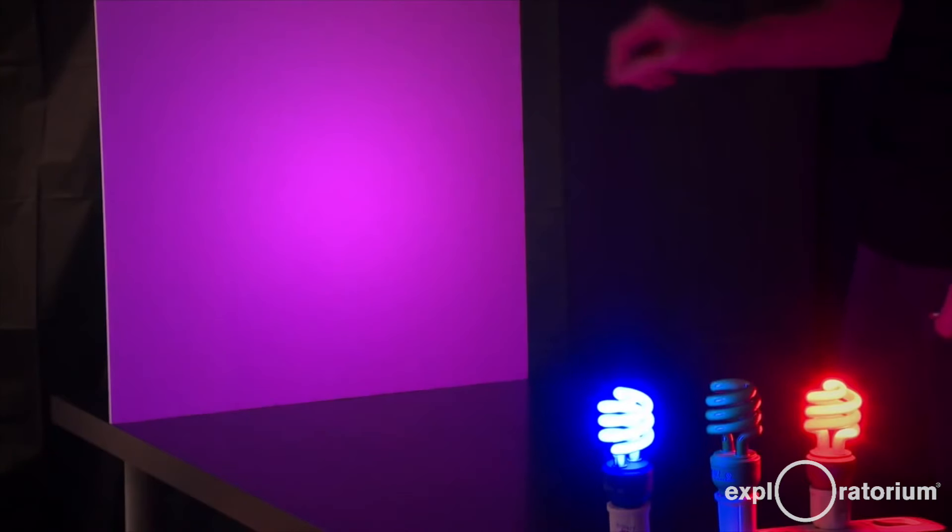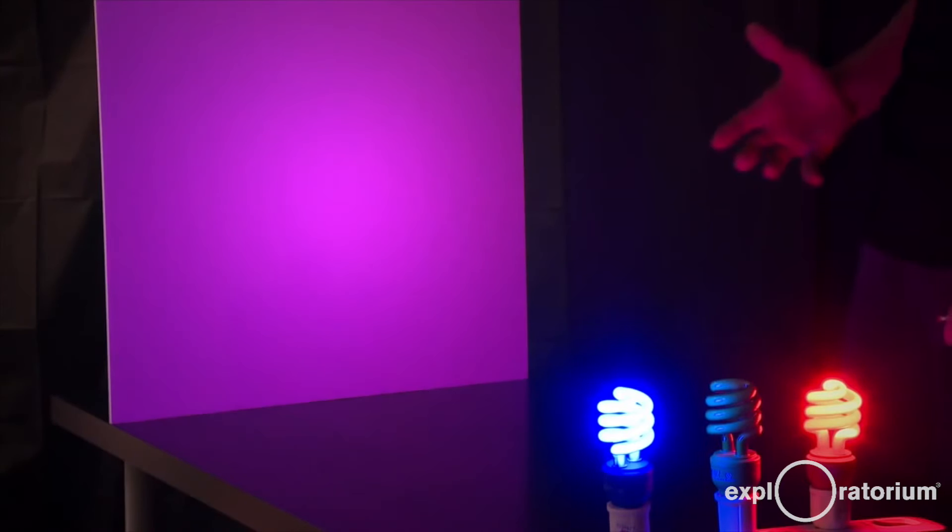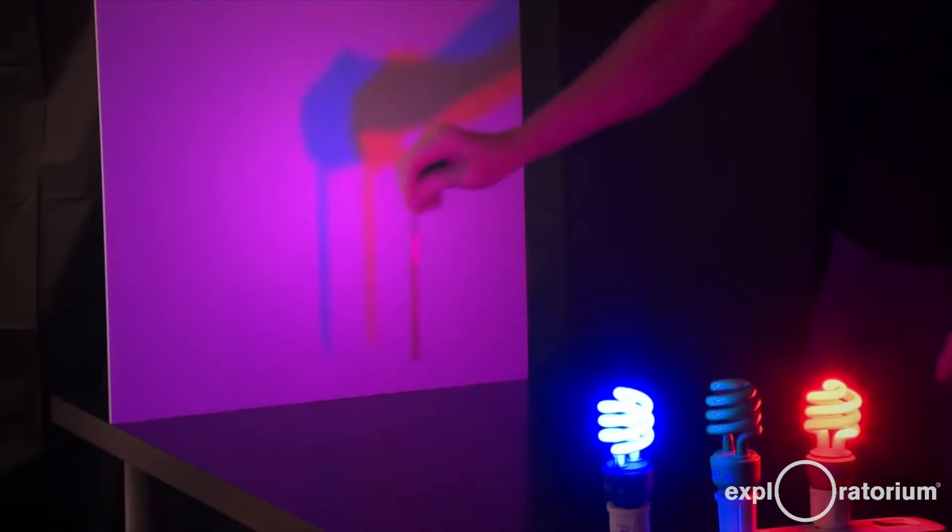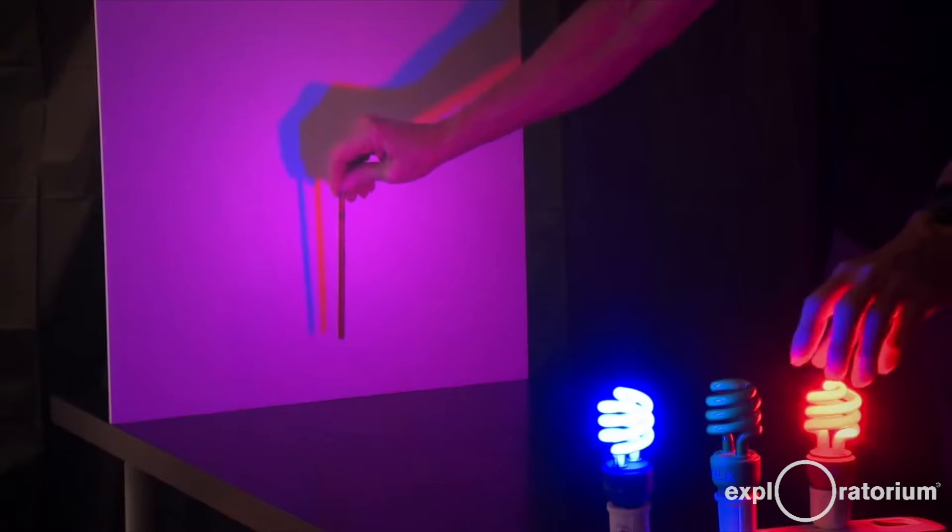When the red light and the blue light shine on the board, they scatter off the board and you see a magenta color. When I make my shadow, I see two different shadows.